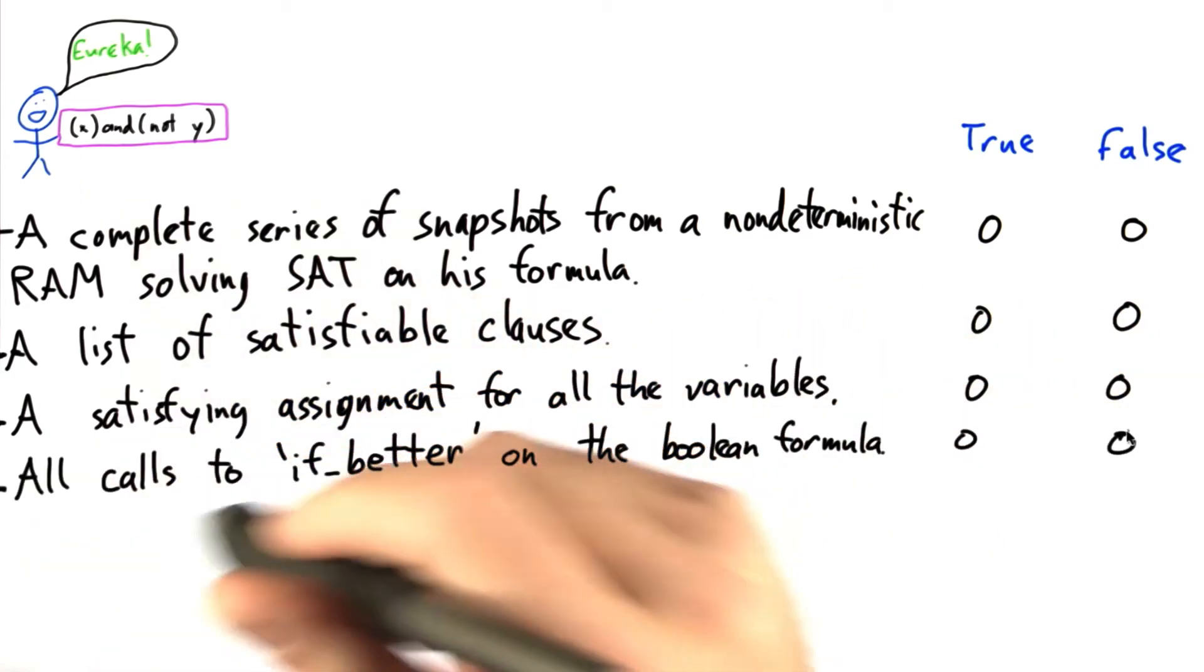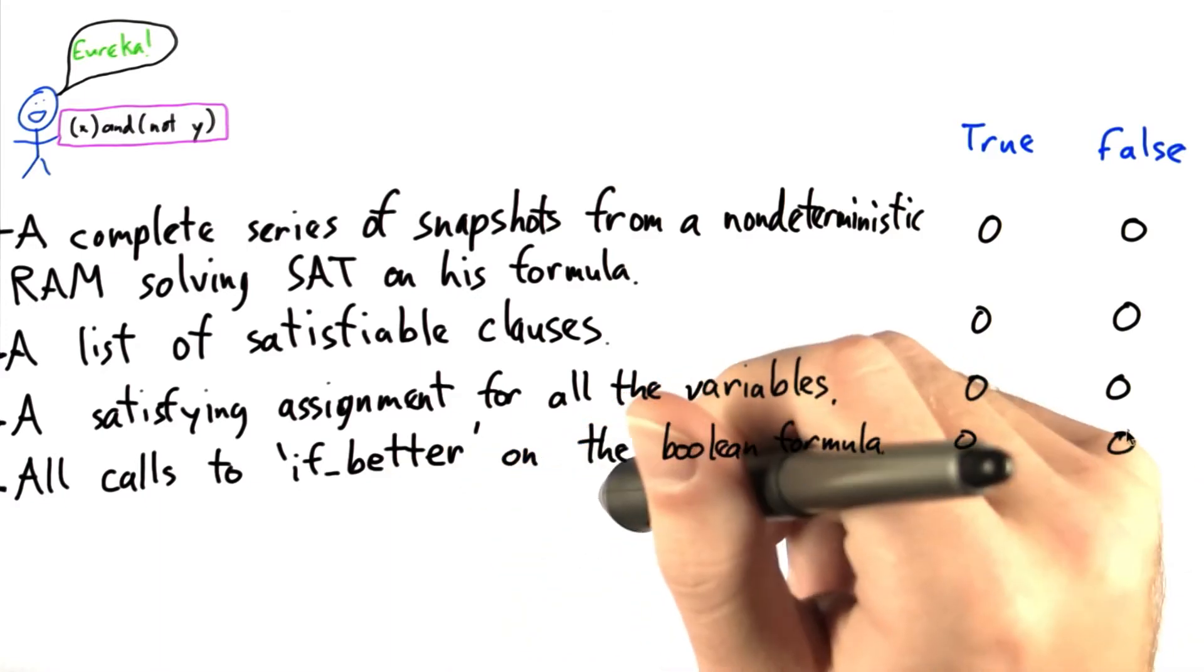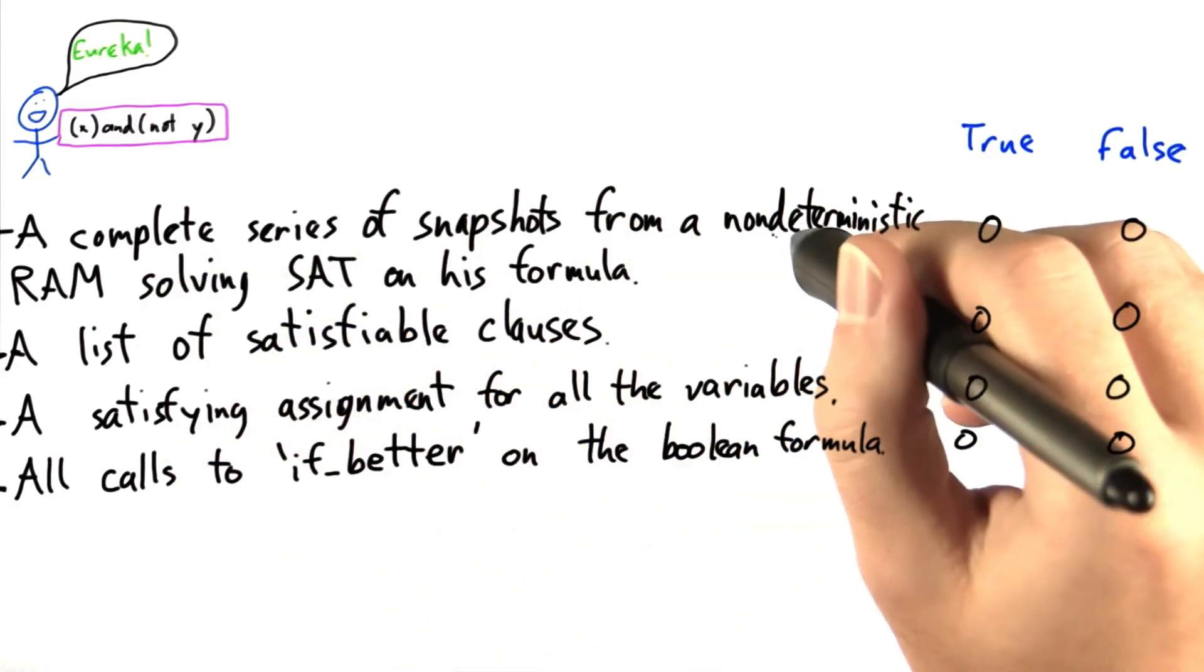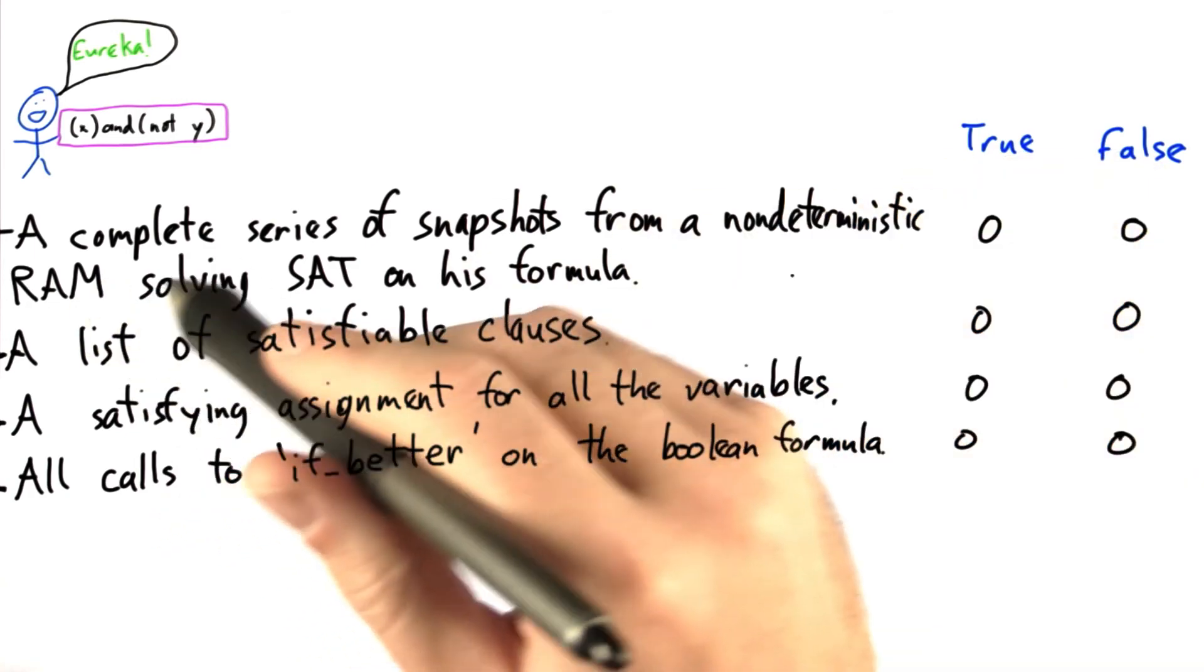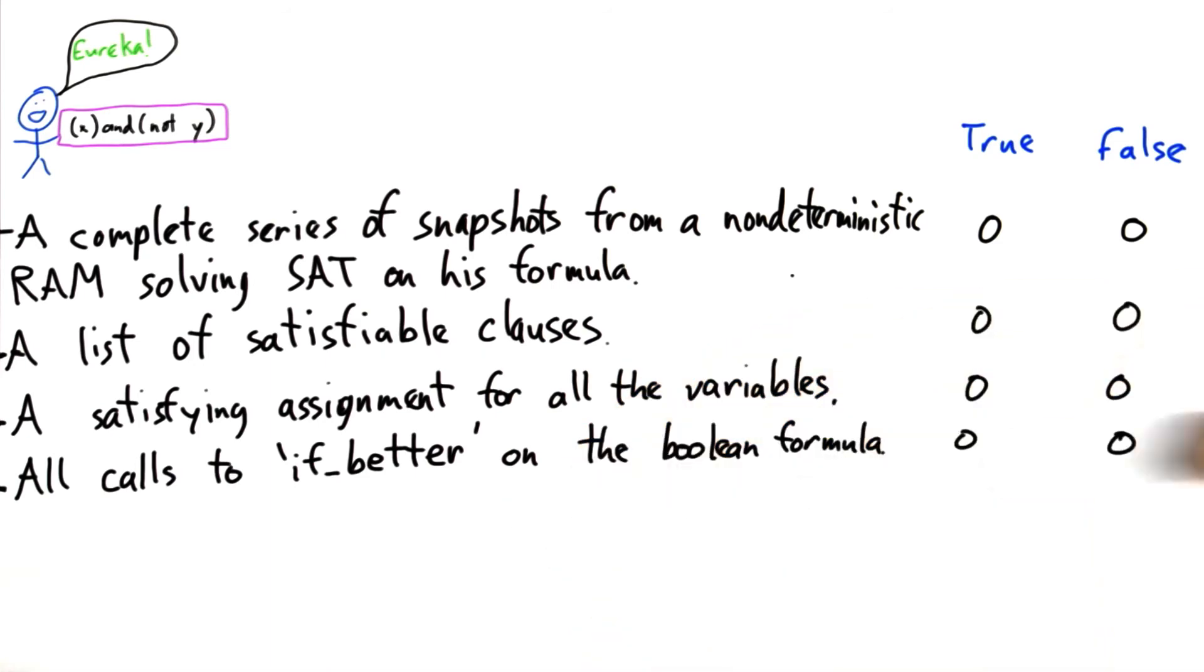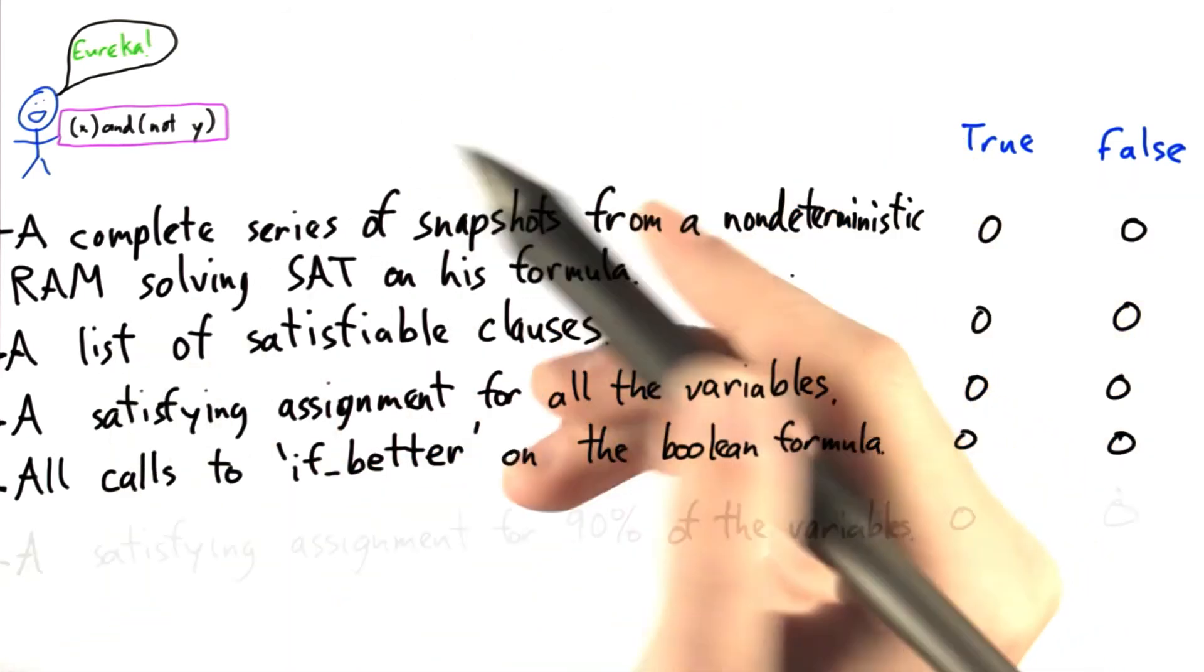What if we had all the calls to if better on the Boolean formula? So, not necessarily a complete series of snapshots from a non-deterministic RAM solving SAT on his formula, but just all the calls to if better. Would that be enough for us to believe Bob? And finally,